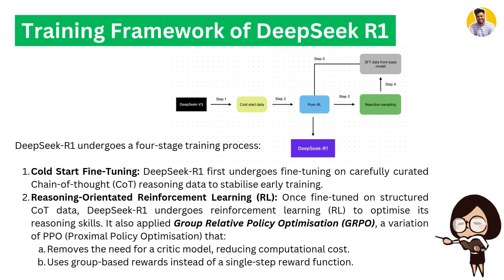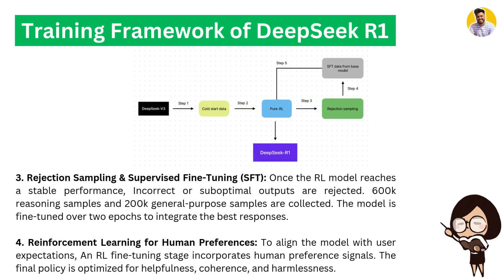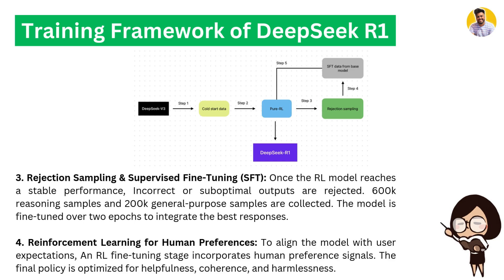Once the reinforcement learning model reaches stable performance, incorrect and sub-optimal outputs are rejected, and the model is fine-tuned over two approaches to integrate the best responses. The final reinforcement learning fine-tuning stage incorporates human preference signals, and the final policy is optimized for helpfulness, coherence, and harmlessness.